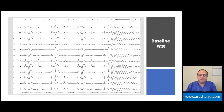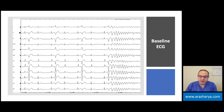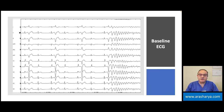The ECG shows sinus rhythm and frequent premature ventricular complexes (PVCs) with negative concordance, superior axis, and positive morphology most compatible with ECGs from the right ventricle in the region of the moderator band. As you can see in this patient, these PVCs created recurrent ventricular fibrillation.